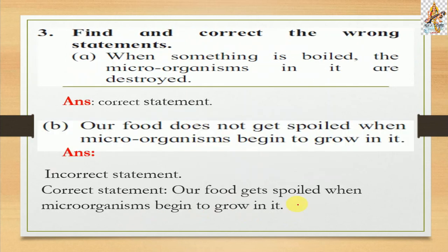Question number three: Find and correct the wrong statement. Statement a: When something is boiled, the microorganisms in it are destroyed. This statement is correct. Statement b: Our food does not get spoiled when microorganisms begin to grow in it. This is an incorrect statement. The correct statement is: our food gets spoiled when microorganisms begin to grow in it.